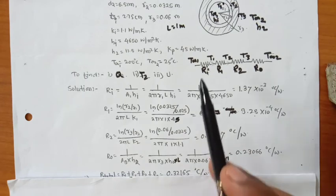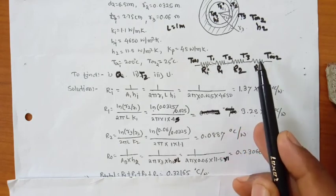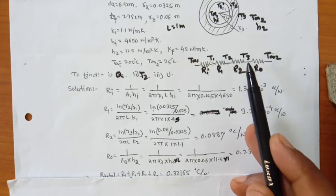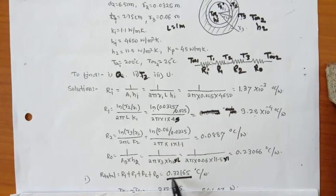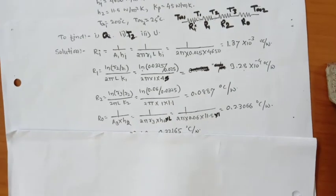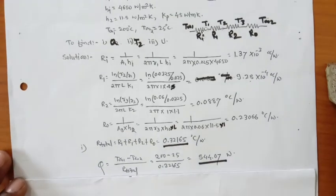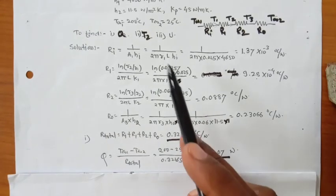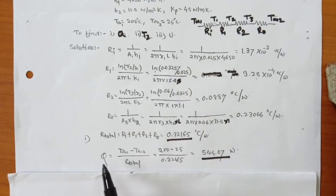From the thermal network, all resistances are in series, so we add them to find total thermal resistance: R_total = Ri + R1 + R2 + Ro. Adding all these values gives R_total = 0.32165 °C/W. Now we find heat transfer per meter length of the pipe. Since all resistances already assume a pipe length of 1 meter, Q equals: